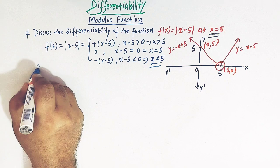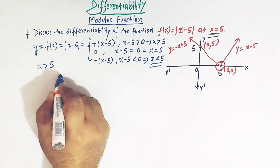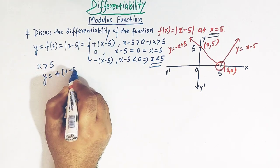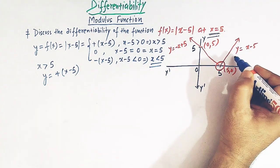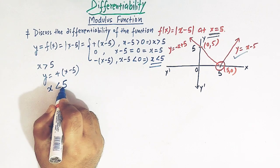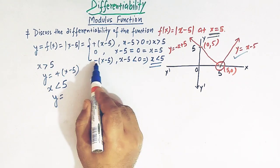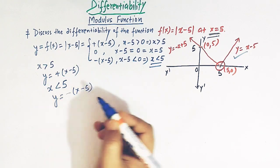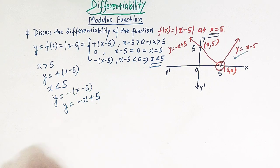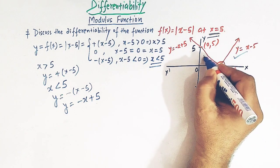So when x > 5, we have y = x - 5, which corresponds to one line on the graph. When x < 5, we have y = -(x - 5), that is y = -x + 5, which is the other line on the graph.